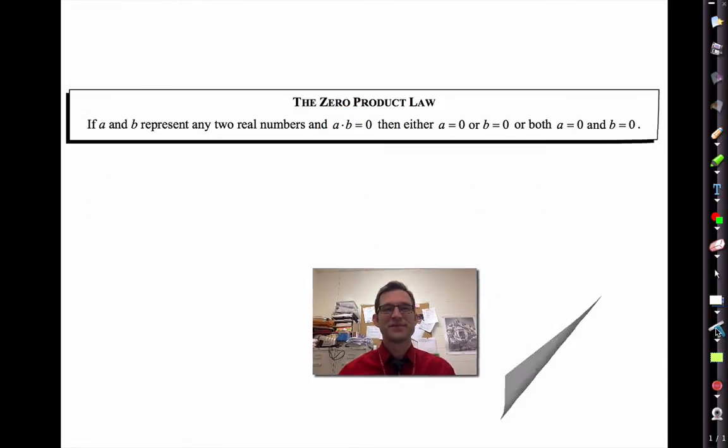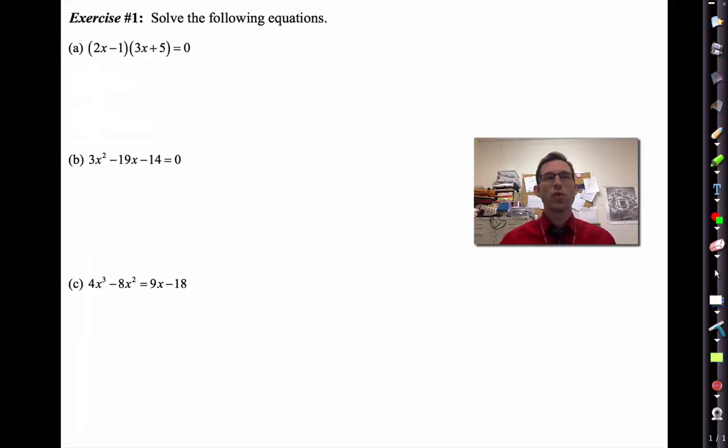In exercise number one it asks us to solve the following equations and here's where we utilize the zero product law. We've got the product of this quantity times this quantity equal to 0. So what we know is that either 2x minus 1 must be equal to 0 or 3x plus 5 must be equal to 0.